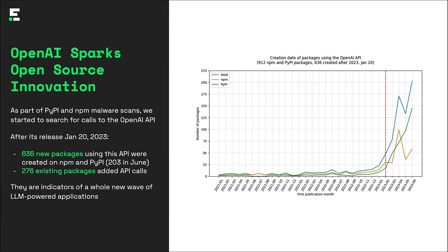What you see on the right-hand side are the numbers we observed. We expected many packages to adopt it, but we were still surprised by the explosion of packages being published. Since the release of the API in January, there are now more than 900 open source packages on those platforms making use of LLMs from OpenAI for various use cases. More than 600 of those packages — 70% — were created only after that release, explaining this steep increase on the right-hand side of the graph.